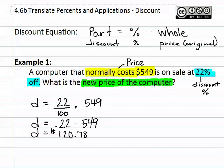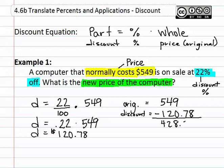In the question, it did not ask us what the discount was. It asked what the new price of the computer would be. To figure this out, we then have to take the original price, which was 549 dollars, and then we take our discount, which was 120 dollars and seventy-eight cents. And if we subtract these two values, we should get the new value of the computer. When we subtract them, we get 428 dollars and twenty-two cents. This is the new price, or the sale price.